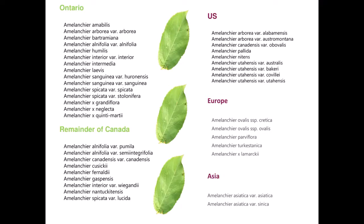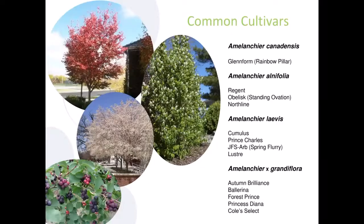In Ontario there's a whole slew of different species you'll find growing in the wild if you look closely. The remainder of Canada — chiefly the east coast — has a couple of species not found in Ontario, and some are actually quite globally rare, such as Amelanchier gaspensis and nantucketensis. In the US there are a few more species. But in Europe there are only five including a hybrid, and only two in Asia. So Ontario is really, really rich in this interesting group of plants.